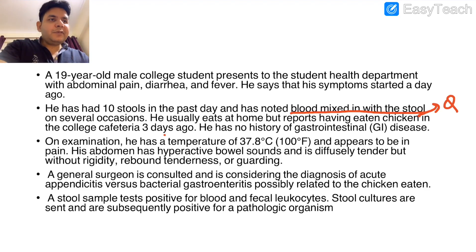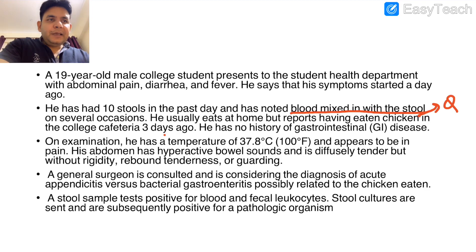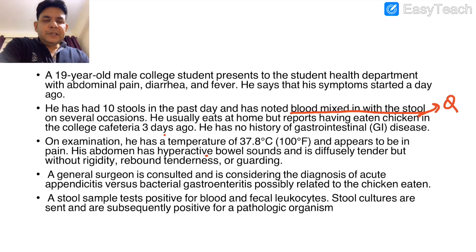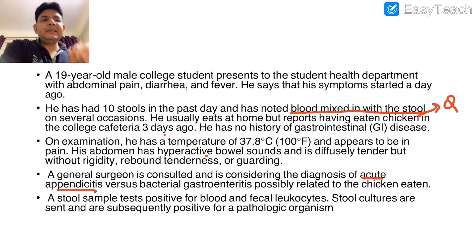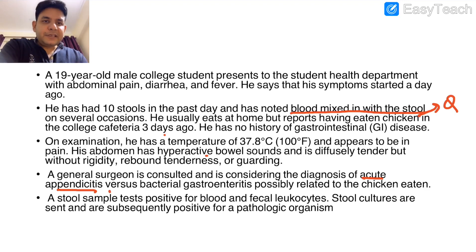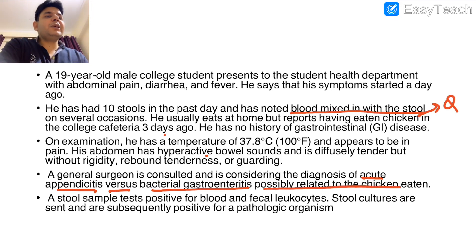He has no history of GI disease before. On examination, temperature is 100°F, he appears to be in pain, abdomen has hyperactive bowel sounds and is diffusely tender but without rigidity, rebound tenderness, or guarding. A general surgeon is consulted and is considering the diagnosis of acute appendicitis versus bacterial gastroenteritis, possibly related to the chicken he had eaten in that cafeteria.